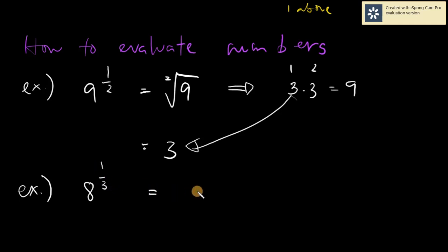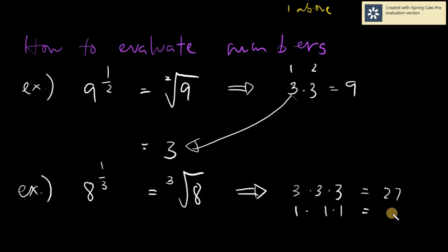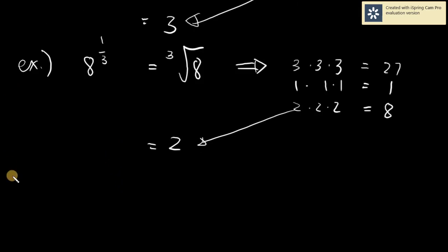Another example: eight raised to one third. The answer would be the cube root of eight. The cube root means you look for a number that when multiplied three times by itself gives eight. Three times three times three is 27 — not eight. One times one times one is one — not eight. Two times two times two is eight. Therefore the answer for eight raised to one third is simply two.